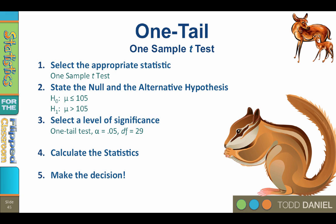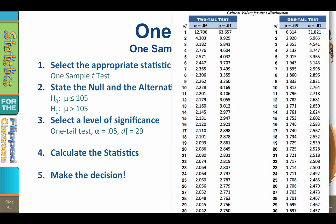To find the critical value, we go to students t-stats. We are using a one-tailed test, so we will focus on the columns on the right. The alpha level is 0.05, with 29 degrees of freedom, so the critical value is a positive 1.699.